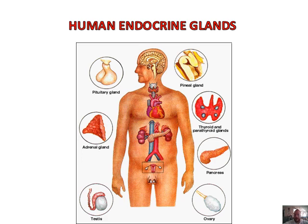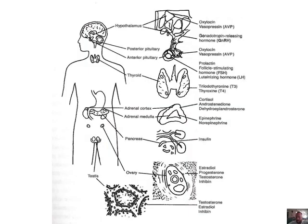The pituitary gland is the master gland, but there is something else that is able to control it. What is really important is just to note the positions of all the target organs — that is probably the most important part. In a previous prelim, students had to draw boxes around where the adrenal glands and thyroid were. You might want to do a very rough sketch of this entire thing, just to know the position of all the specific organs.